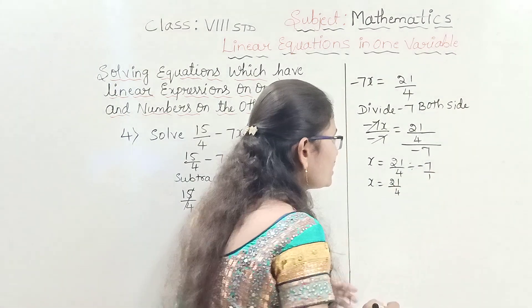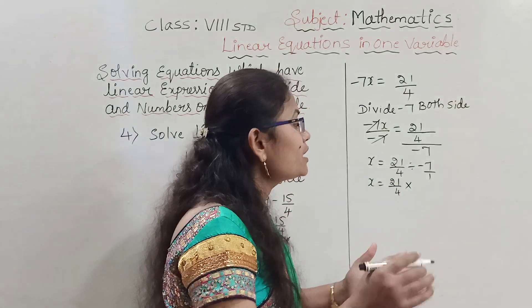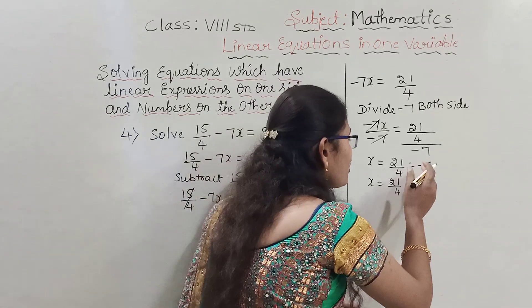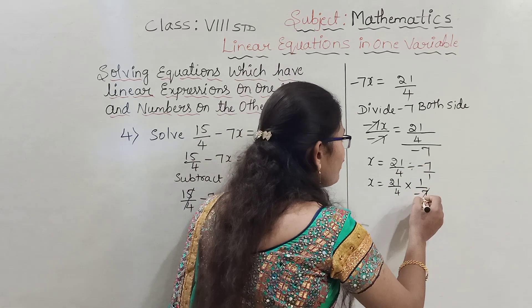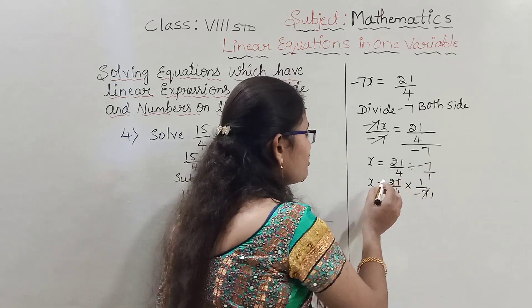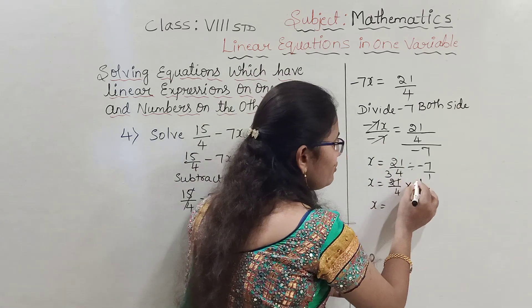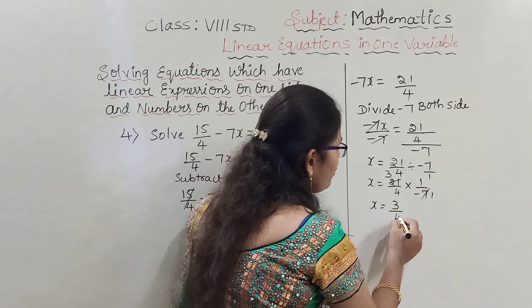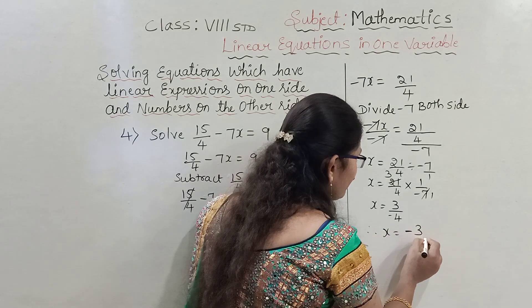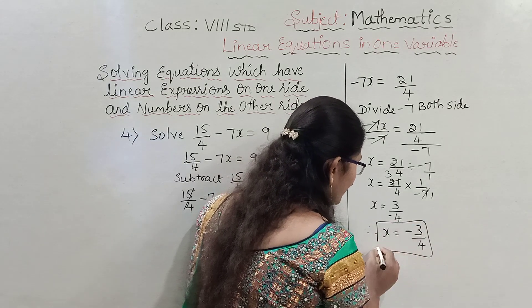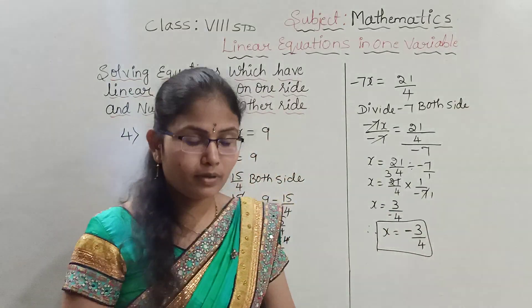As we learned previously, dividing by minus 7 becomes multiplying by the reciprocal, which is 1 by minus 7. So x equals 21 by 4 times 1 by minus 7. 7 goes into 21 three times: 3 by 4. Plus into minus gives minus. Therefore x equals minus 3 by 4. The required solution is minus 3 by 4.